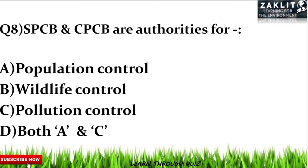The next question was a basic yet interesting one: SPCB and CPCB are the authorities for which of the following? The answer is only pollution control — option C — because they don't have a specific role in population control or wildlife control.